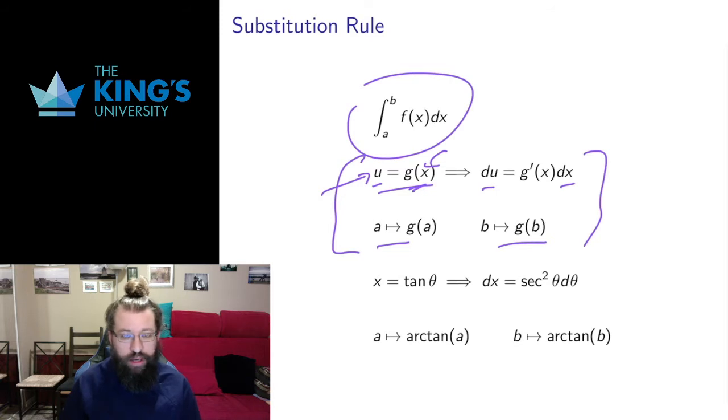This worked for certain kinds of setups, setups where we were looking to do reverse chain rule, where things were set up nicely that we had an inside and an outside function, or something about the substitution and the setup where we could find a piece like this g prime that sort of made it all fit together.